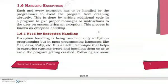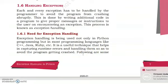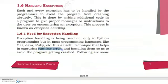Now, what is the need for exception handling? Exception handling is used not only in Python but in most programming languages like C++, Java, and Ruby. It is a useful technique that helps in capturing runtime errors and handling them so as to avoid the program getting crashed. When a program gets crashed it gets corrupted — our code is filled with loads of errors — and this normally happens during the running, compiling, or interpreting of the program, which is why we call it a runtime error.